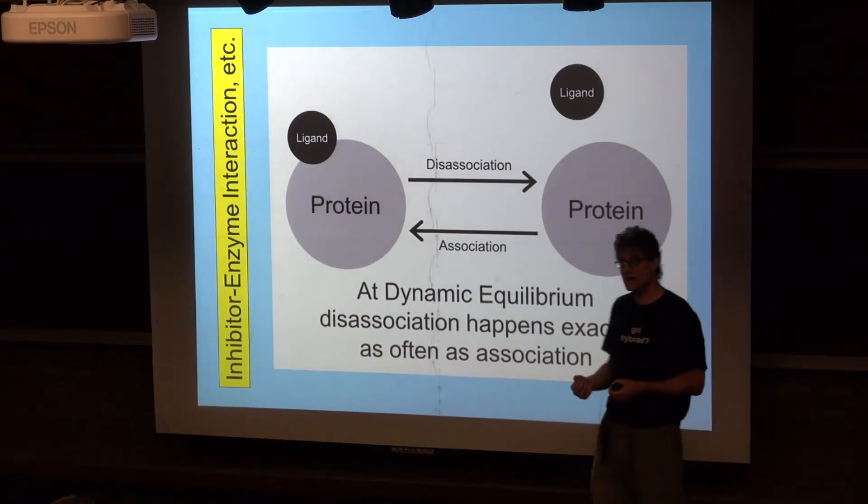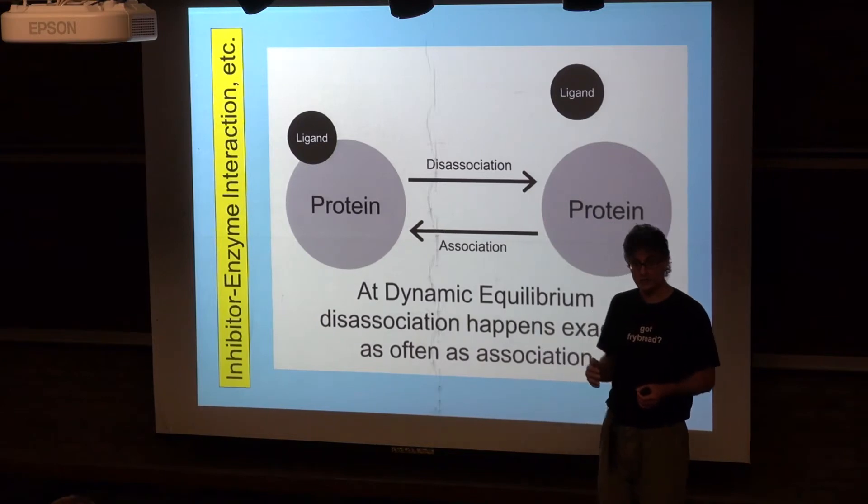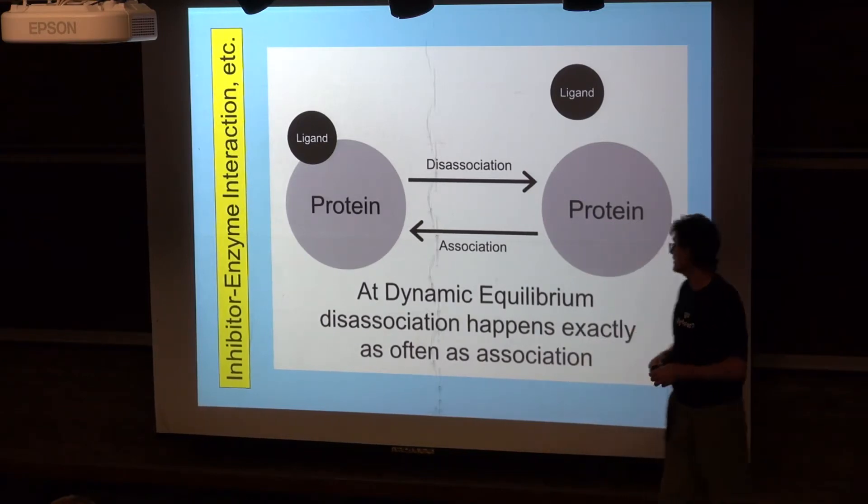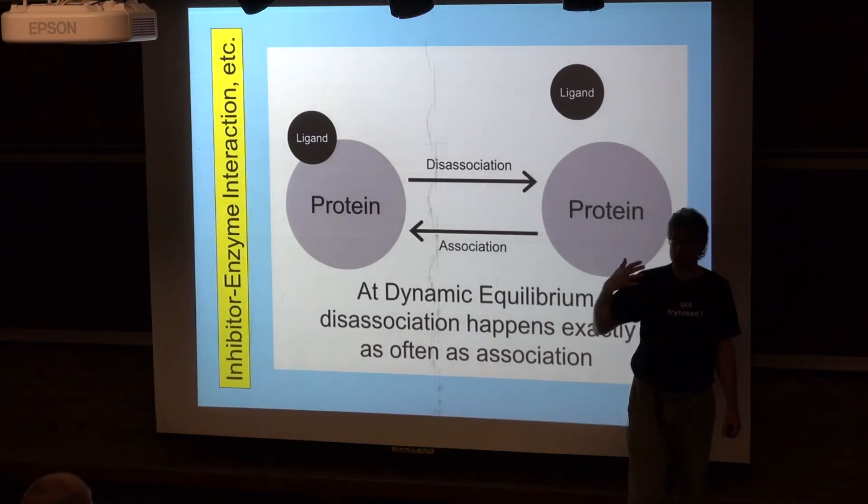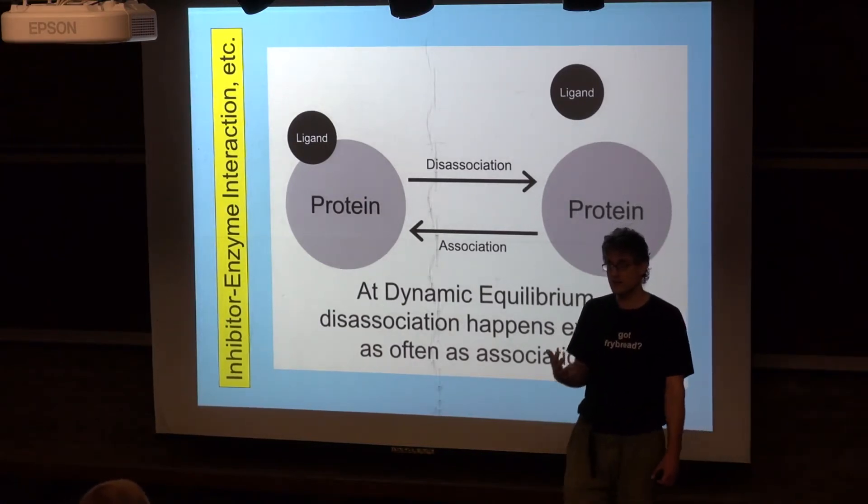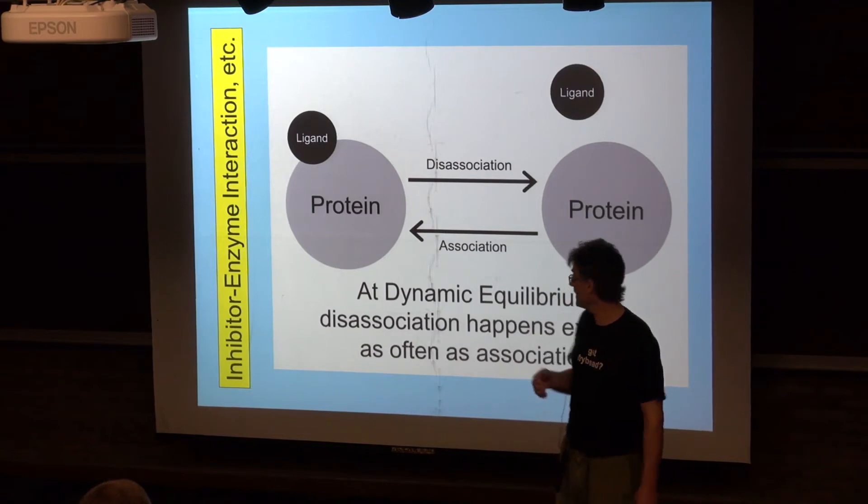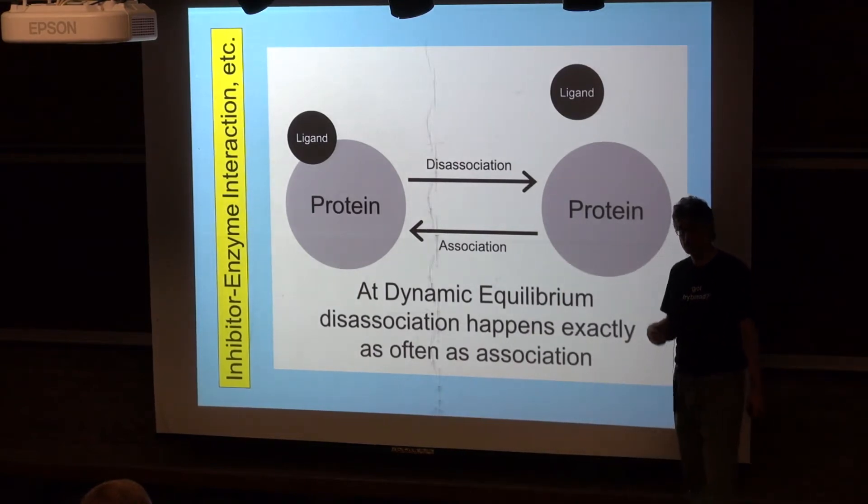Often these ligands bind only reversibly, so we have a binding constant associated with the ligand that describes the affinity that the bigger molecule has for the ligand.